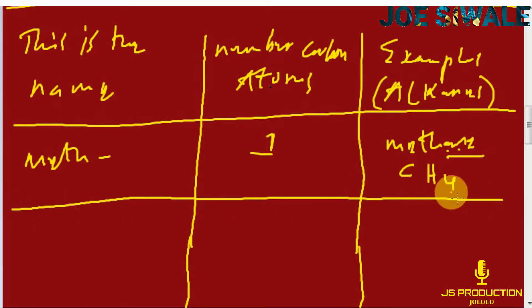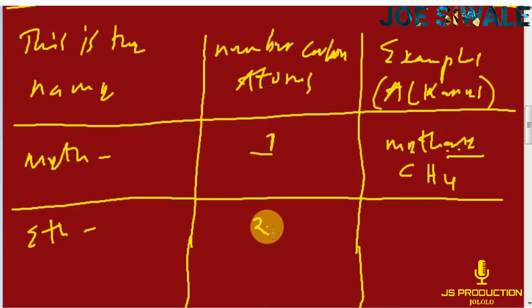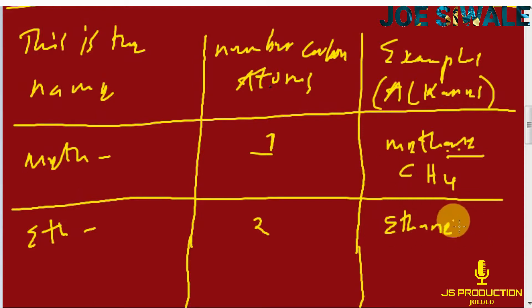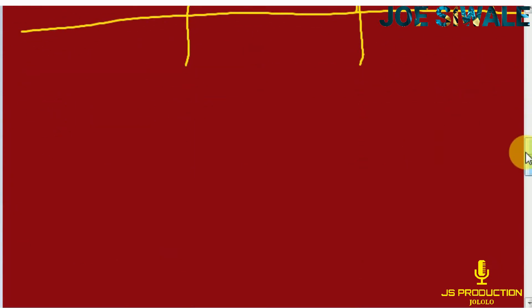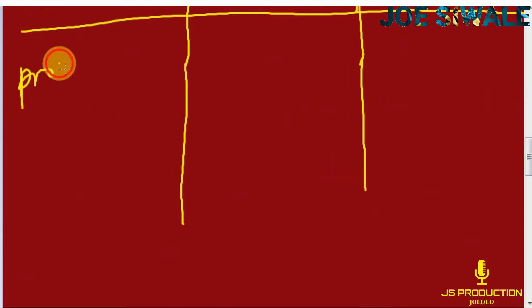If the name starts with ETH-, that means it has two carbon atoms. An example from the alkanes is ethane, written as C2H6. If the name starts with PROP-, that means it has three carbon atoms, and an example from the alkanes is propane.